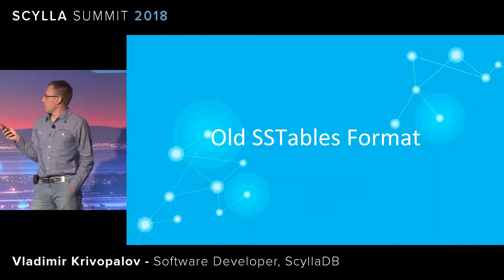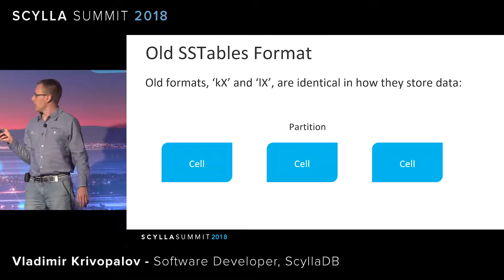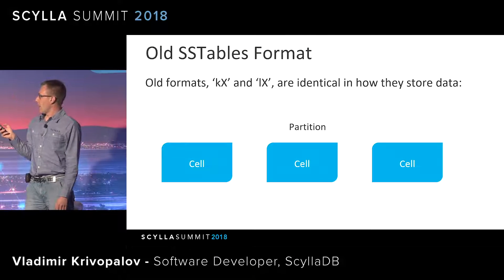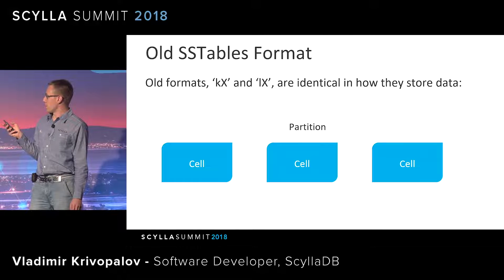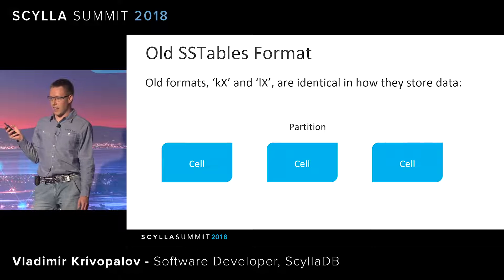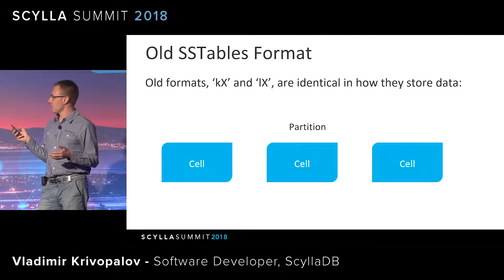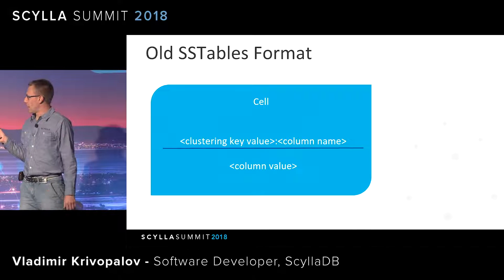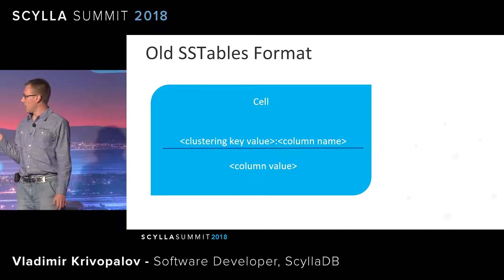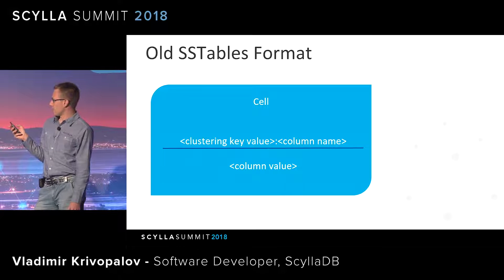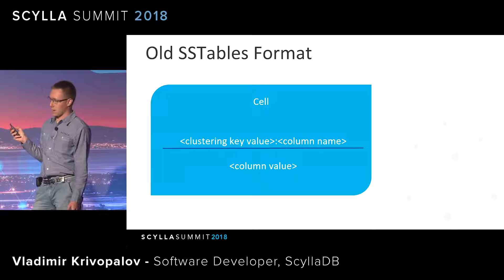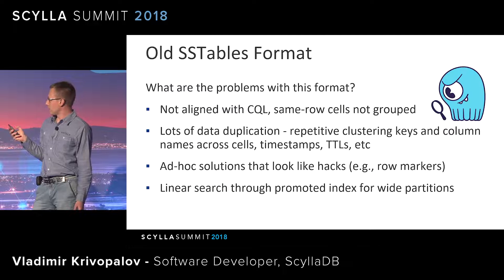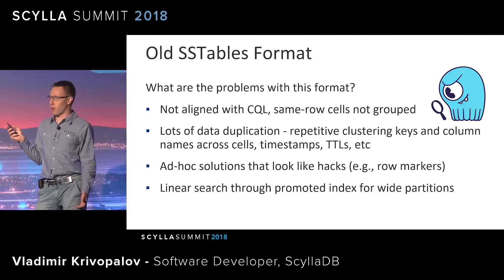Let's take a look at the old SSTables format. This is a rough scheme of how data used to be stored. We had a partition, and each data file is pretty much just a sequence of partitions. Each partition consists of cells — there is no notion of rows within a partition in the old format, only cells. Each cell has a name and a value. The cell's name consists of the clustering key value and the column name, and it also stores the column value if present.